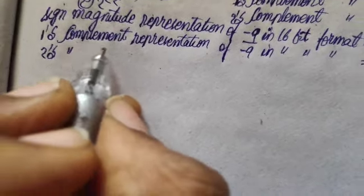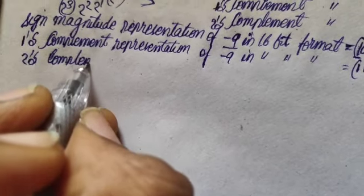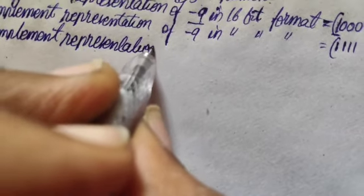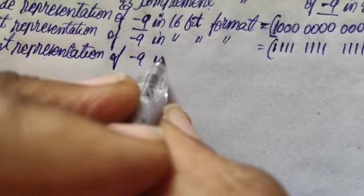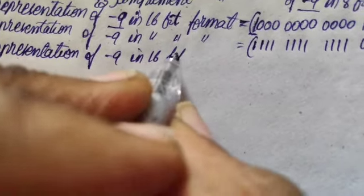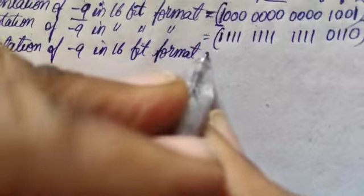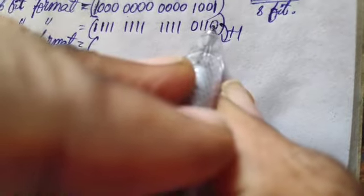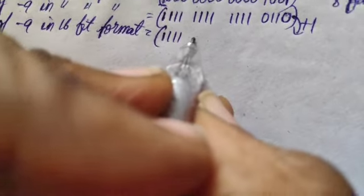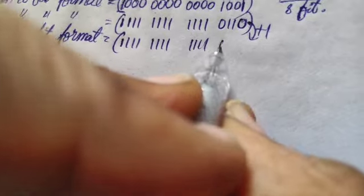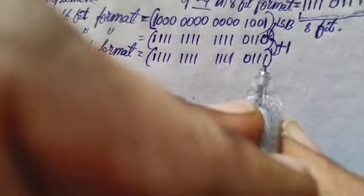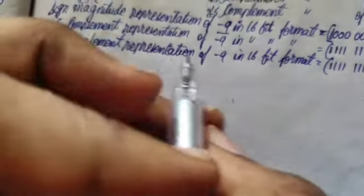And let us do the two's complement. You just need to add plus 1 towards the LSB of the ones' complement. So this is the LSB place, which is going to be added with 1, and we get this two's complement representation.